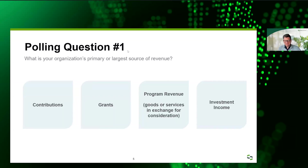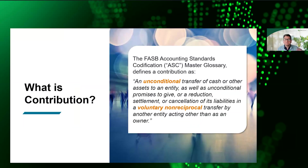The polling question results are in. It looks like the most folks — 36% — have a primary source of either contributions or program revenues, split pretty evenly, with about 20% receiving grants and about 8% with investment income as their primary source. So obviously this subject is pretty applicable to most of the folks on the call.